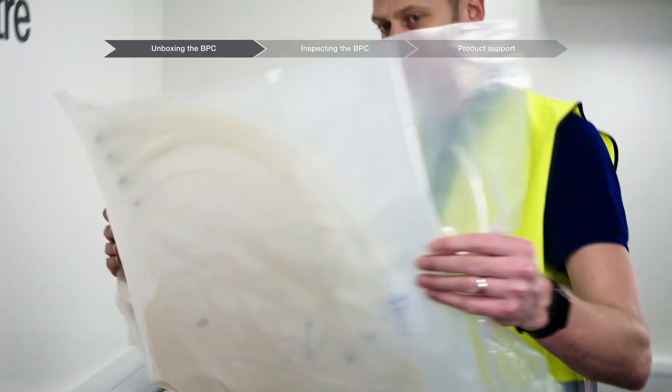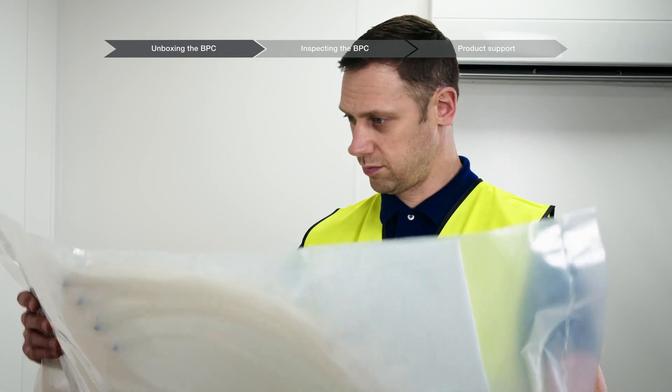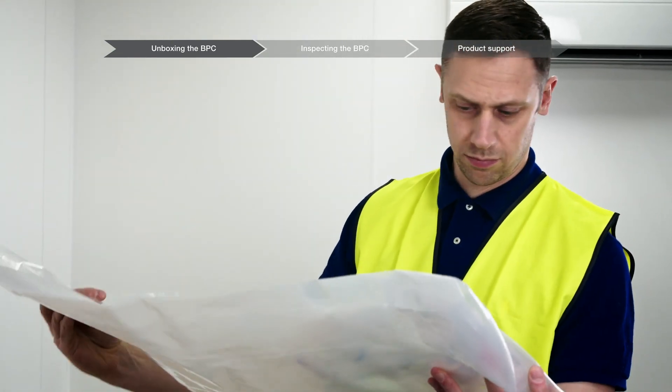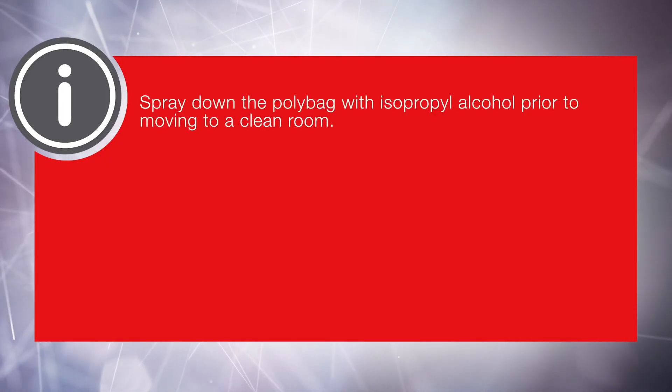After removing the BPC from the box, inspect the outer poly bag for any damage. Spray down the poly bag with isopropyl alcohol prior to moving to a clean room.